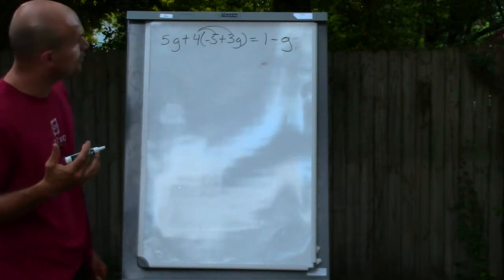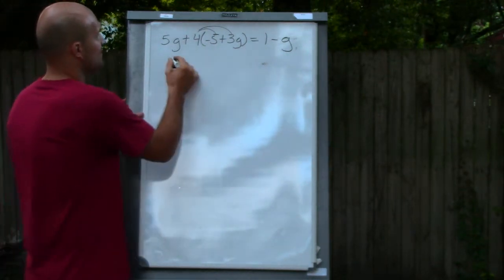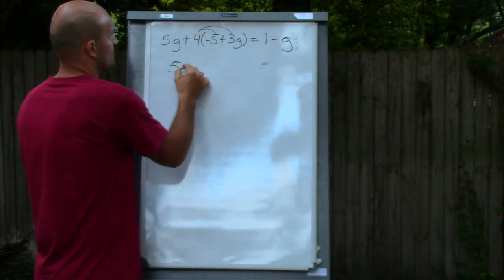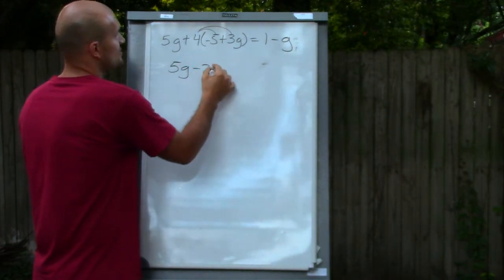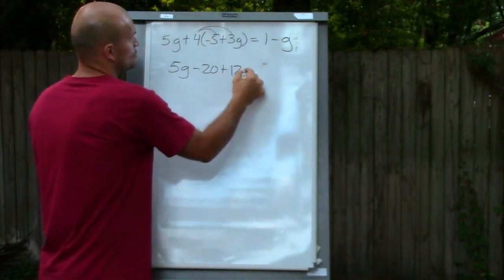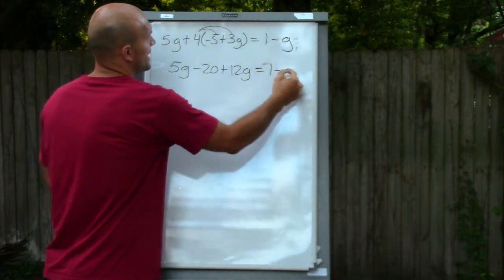So to multiply the four by both of those terms, what I can have here is 5g minus 20 plus 12g equals 1 minus g.